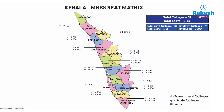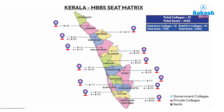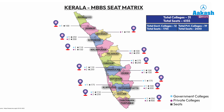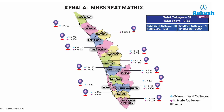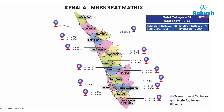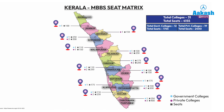To check the seats available nearby, you can have a look at the map shown on the screen. You can check which medical colleges are there in your own city or nearby cities — it is clearly mentioned on the map.